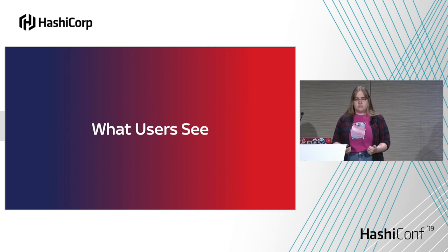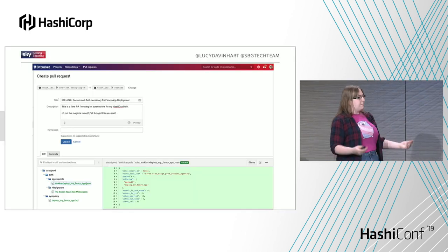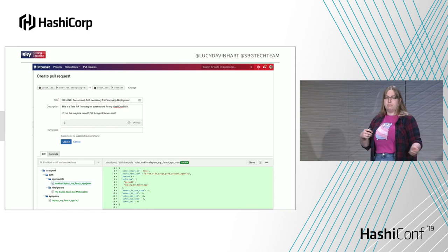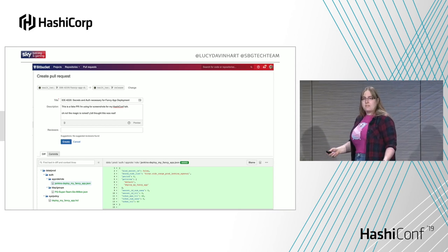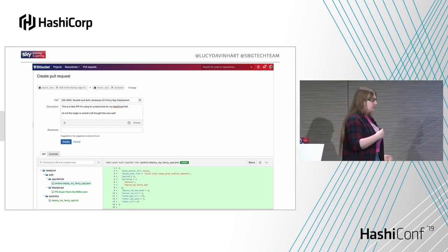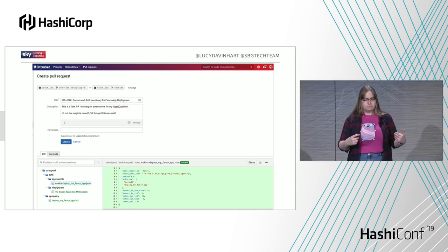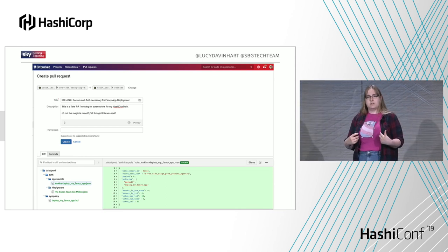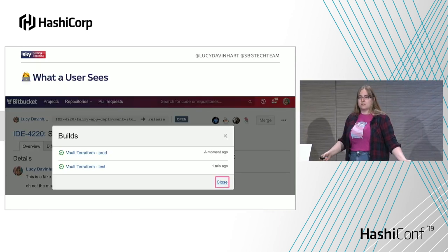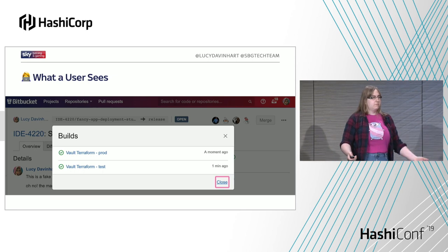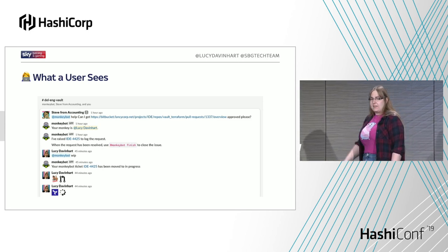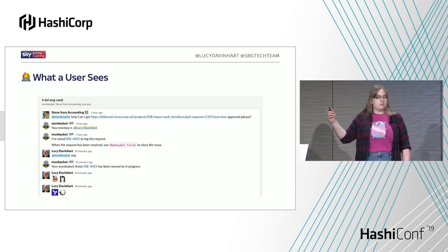As far as our users are concerned, this looks like: they go into Bitbucket, either make changes directly in the editor for simple changes, or clone the repo, make changes, and push it back. Either way, they end up with a pull request. We ask our users to get those pull requests approved within their team before they send them to us, which often picks up little issues and gives us assurance that people are asking for things they're supposed to have access to. Then they come to one of our Slack channels and say 'I have this pull request for Vault, can you approve it?' — and they interact with a Slack bot that handles this for us.